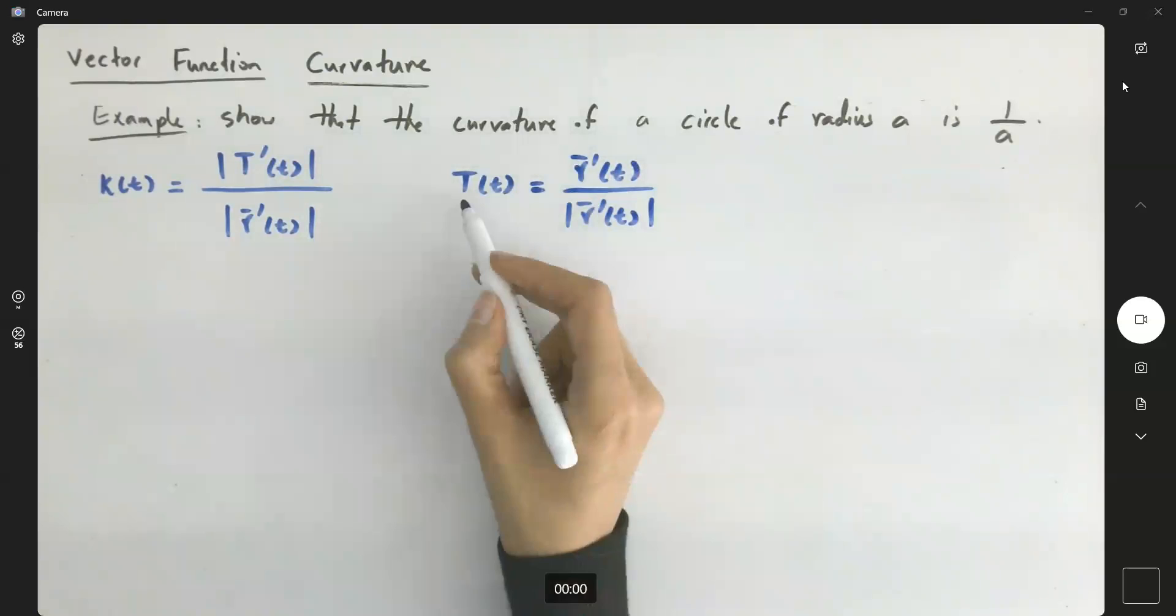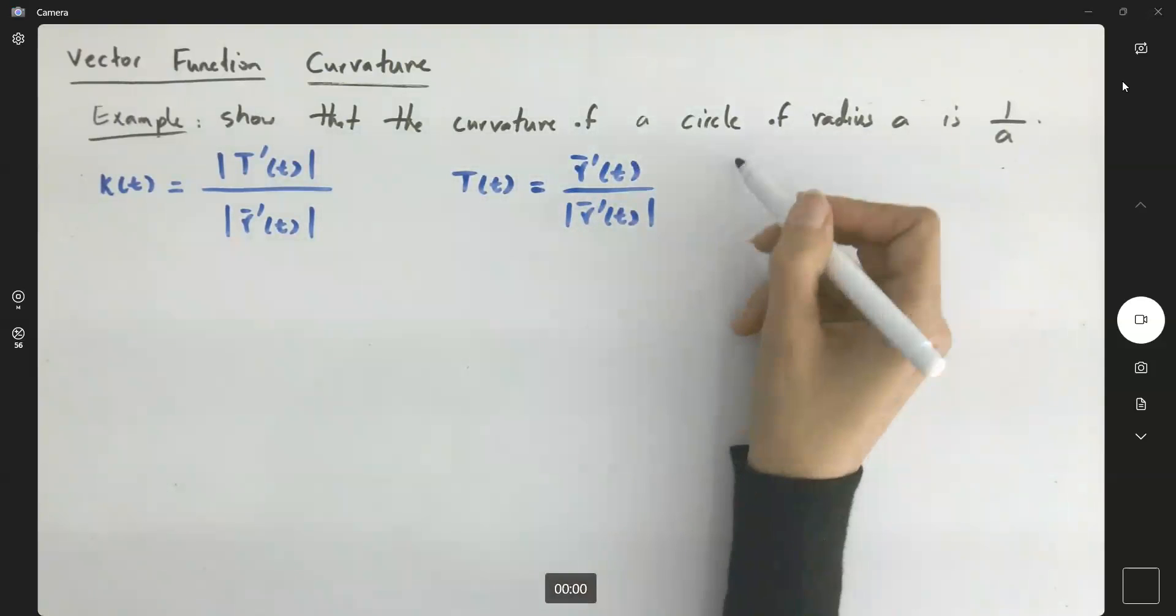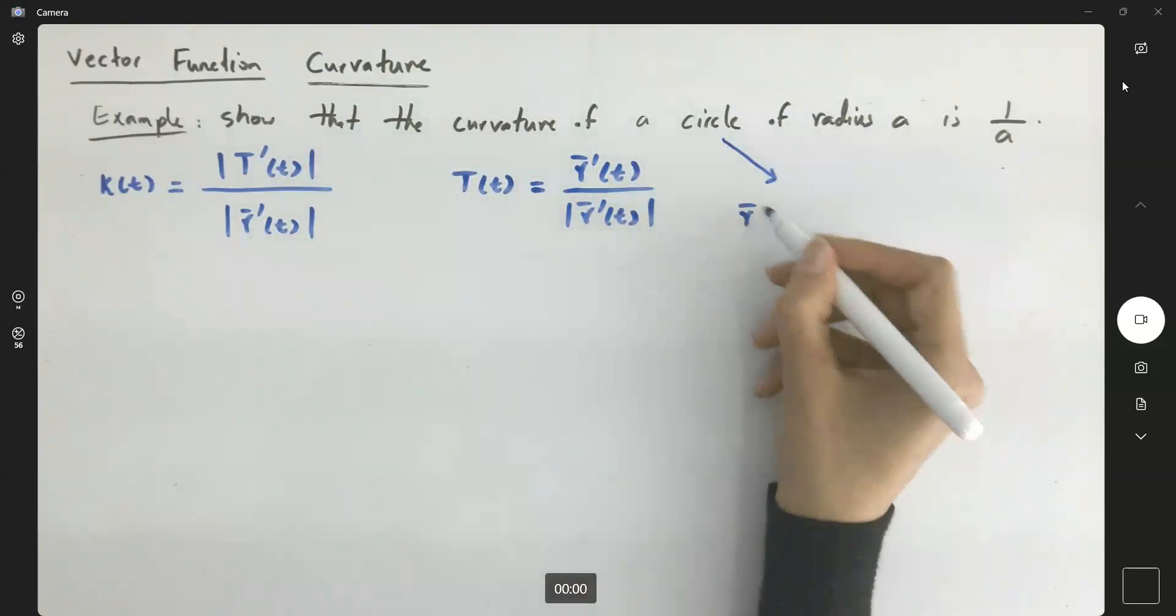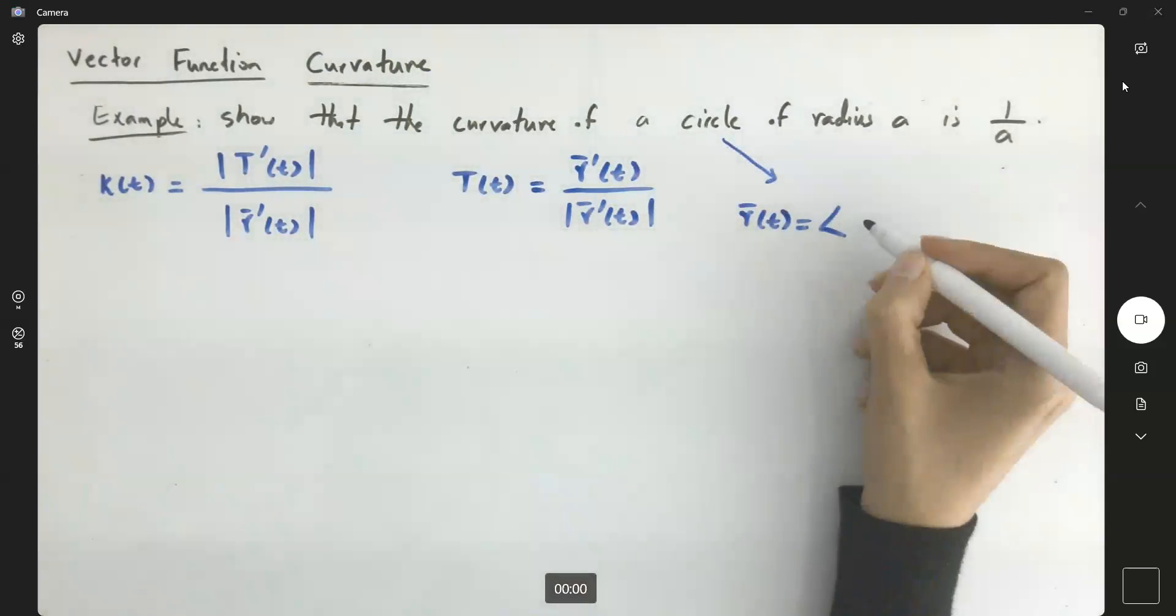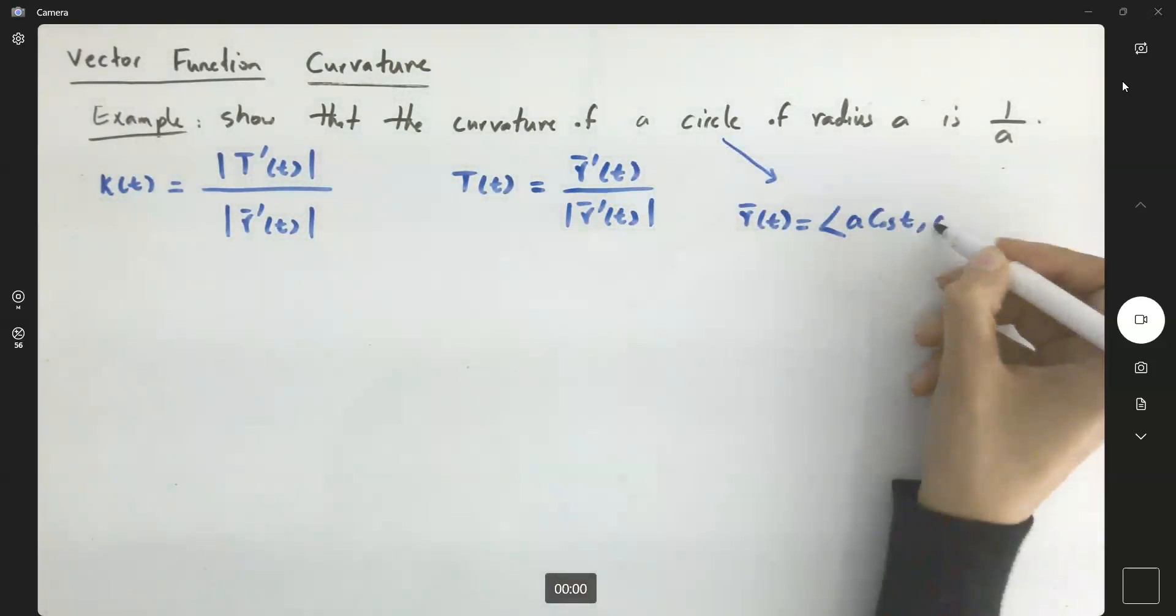So what do we need? We need to find R of T for a circle. Parametrization for a circle of radius A centered at the origin is A cosine T and A sine T.